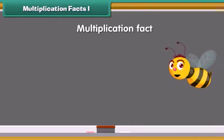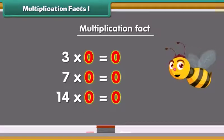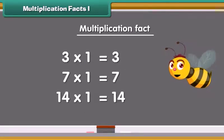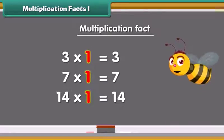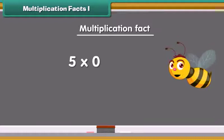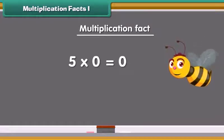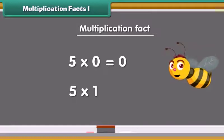We start with some multiplication facts. Any number multiplied by 0 is always equal to 0. A number multiplied by 1 is equal to the same number. Example: 5 multiplied by 0 is 0, 5 multiplied by 1 is 5.